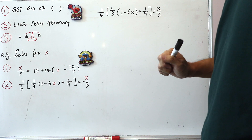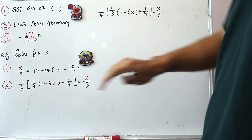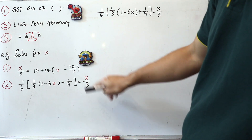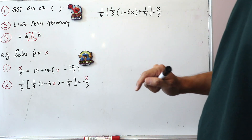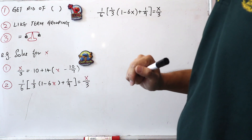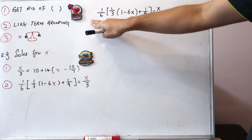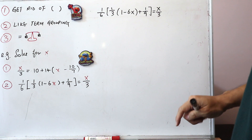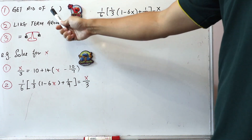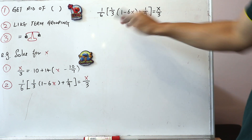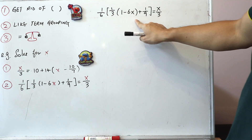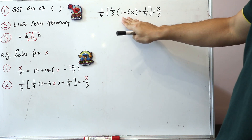Now let's take a look at question number two. Although this question looks a little bit more complicated than number one, I can assure you that if you follow these three highlights, you can answer it. So I've written question two here. Let's take a look at the highlights. The first highlight: get rid of the brackets. We have a square bracket and a round bracket, so let's deal with each bracket at a time, starting with the round bracket.